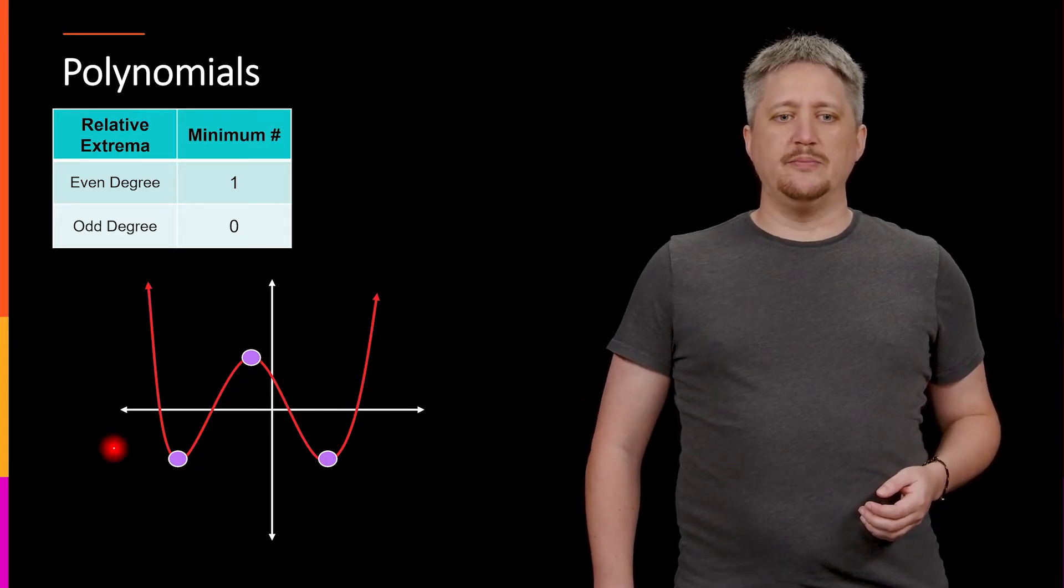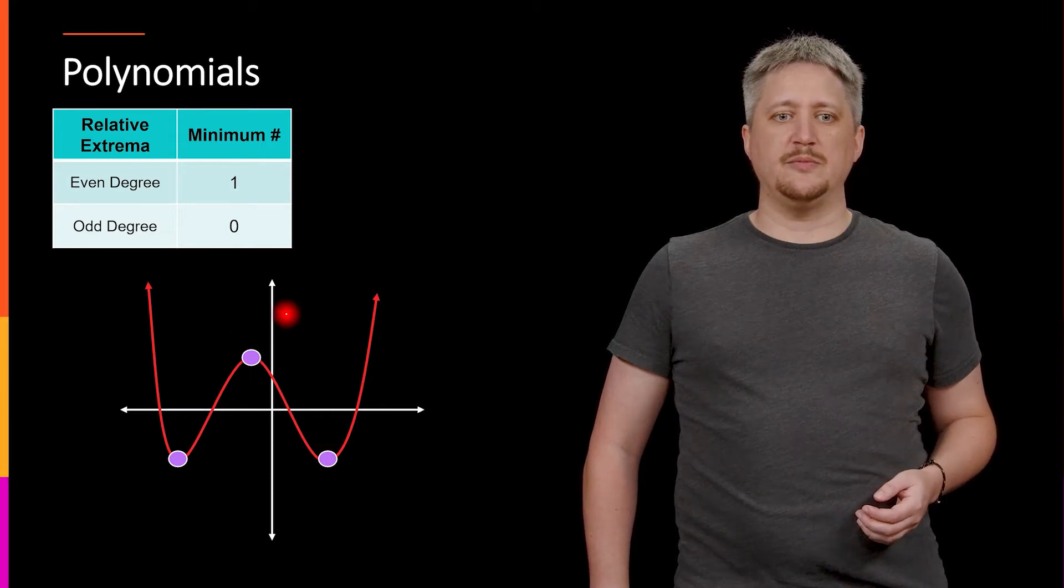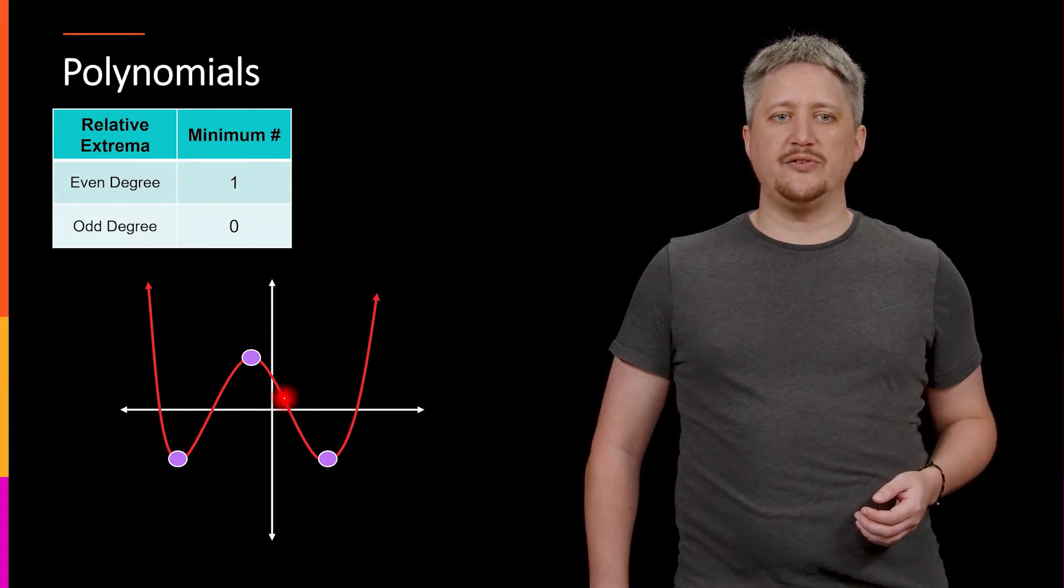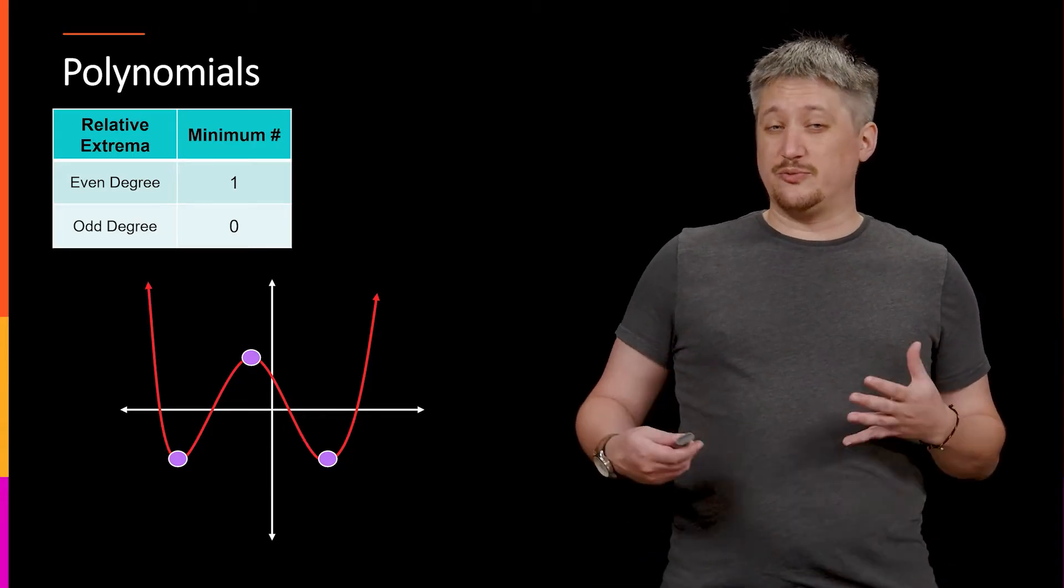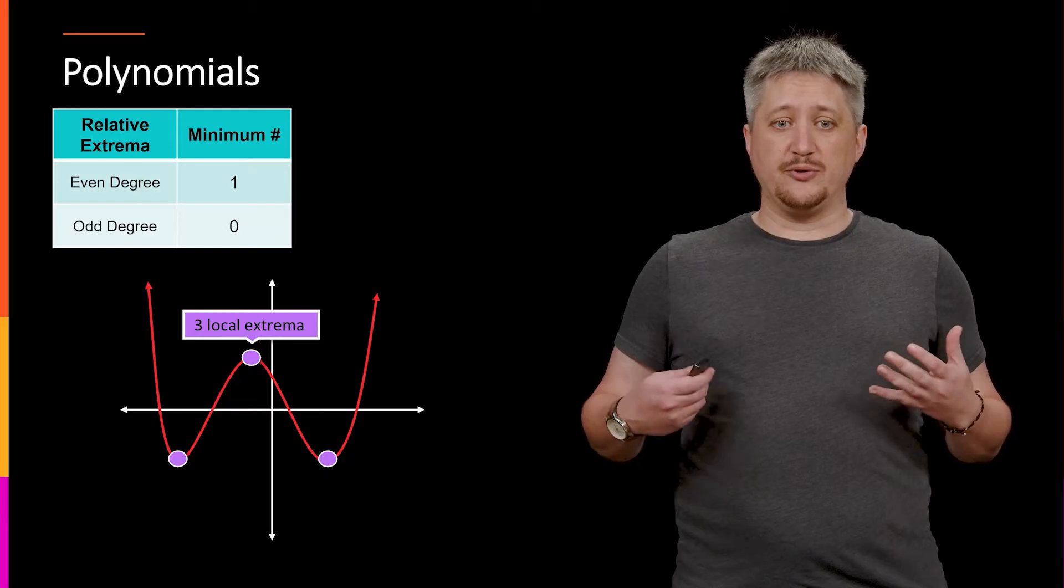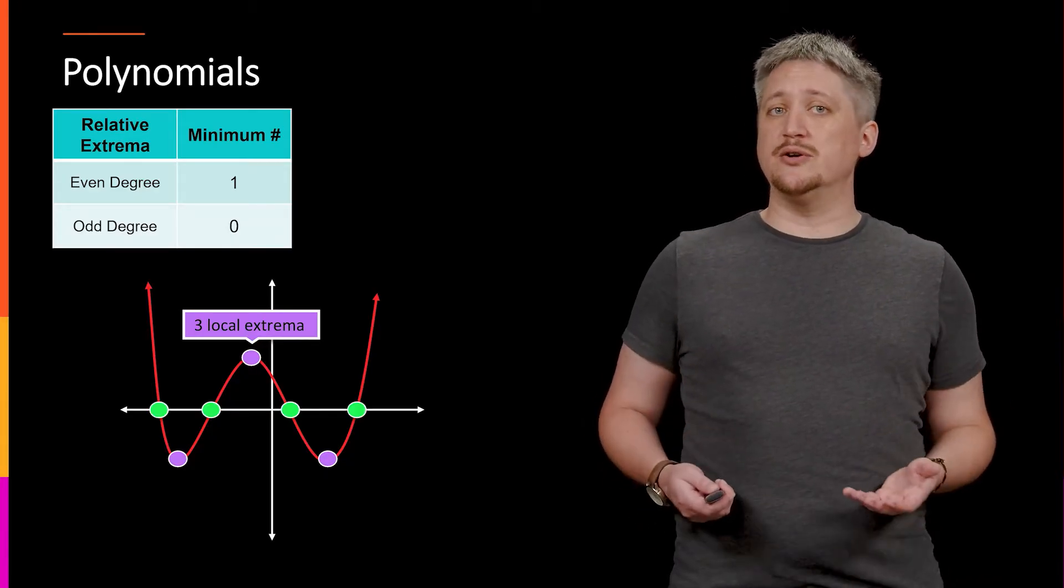and this local maximum up here. So we have three relative extrema. And we want to know how does this relate to the degree of the function. So three local extrema. But notice we have four zeros, right?